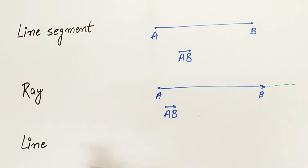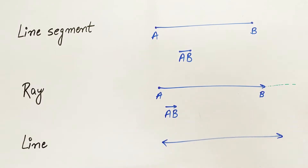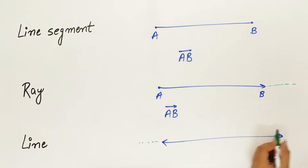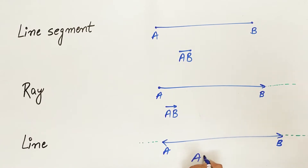A line is a quite familiar term. It has no endpoints, meaning it can be extended from both directions, and it is denoted by AB.